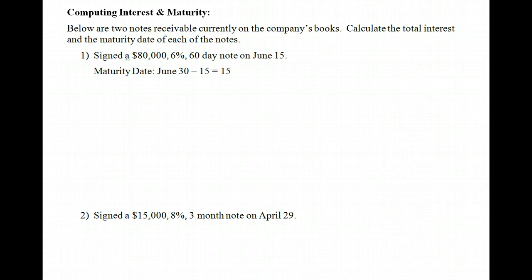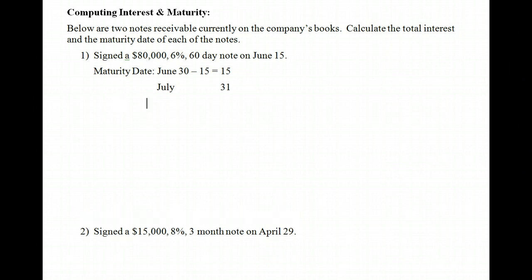That 15 days in June doesn't quite get us to the end, so we move to July, which has 31 days. Taking 31 plus 15 brings us to 46 days total. Since this is a 60-day note, we've accounted for 46, leaving 14 days remaining. After July comes August, and we need 14 days in August. So 15 plus 31 plus 14 equals the 60-day note. This note would physically mature on August 14th — that's when it would be due.